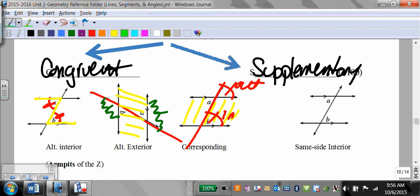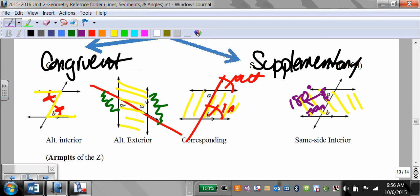Last one. Same side interior. They're between the lines and same side. Those are not congruent. Almost everything else is. These are the only ones that are supplementary. They add up to 180. We're going to do two problems together and you'll be on your own. Adds up to 180, same side interior, also known as consecutive interior.